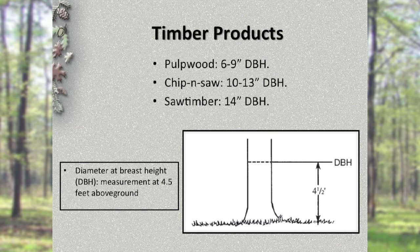When timber production is a primary objective, foresters often use an even-aged form of forest management. As the name implies, trees in the stands of that forest are of the same age. They are planted and managed to produce valuable timber products. Typical timber products produced over the life of a timber stand rotation include pulpwood, chip and saw, and saw timber. Trees are often described by DBH, or diameter at breast height — a measurement taken at four and a half feet above ground. Generally, DBH ranges are 6 to 9 inches for pulpwood, 10 to 13 inches for chip and saw, and 14 inches and above for saw timber.